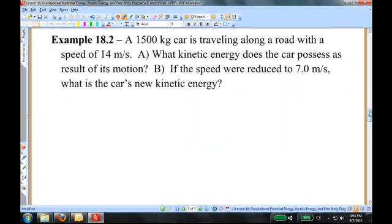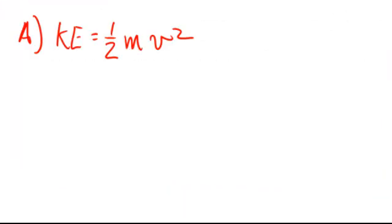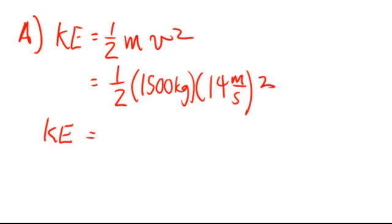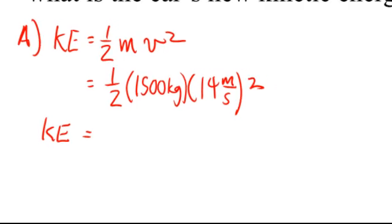This is example 18.2 from your textbook. A 1500 kilogram car is traveling along a road with a speed of 14 meters per second. What kinetic energy does the car possess as a result of its motion? And B, if the speed were reduced to 7 meters per second, what's the car's new kinetic energy? There's the kinetic energy formula, and now let's put in the numbers. And when I put those numbers into my calculator, I get 147,000 joules.